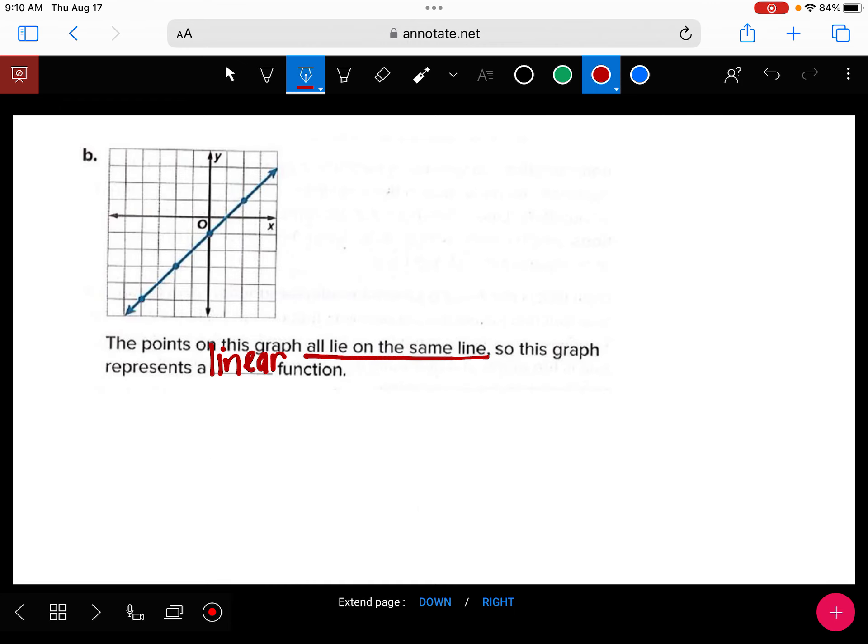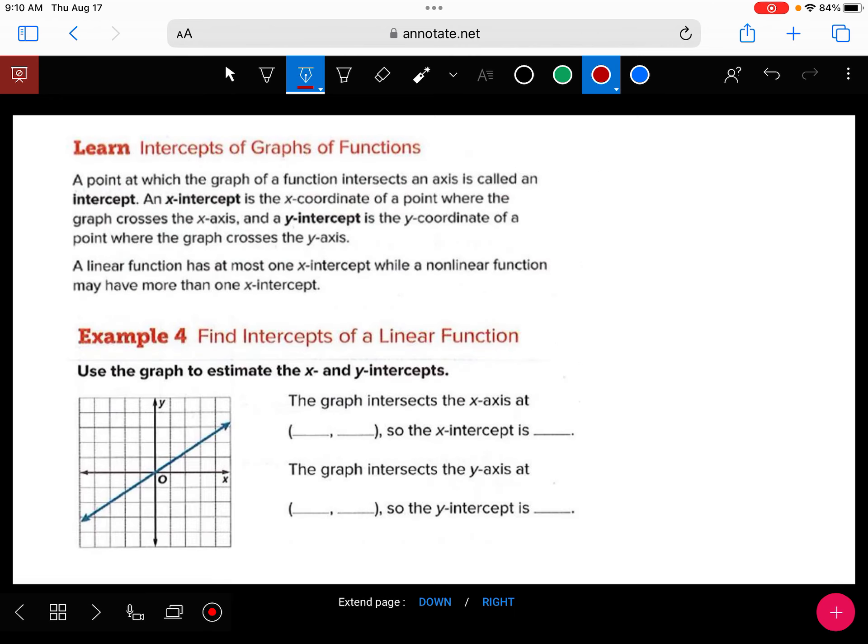All right, and then the last component of 8.2 is intercepts, and an intercept is where it crosses through the axis. So a couple things to highlight or underline: the x-intercept is the point where it crosses the x-axis, and the y-intercept is the point where it crosses the y-axis.